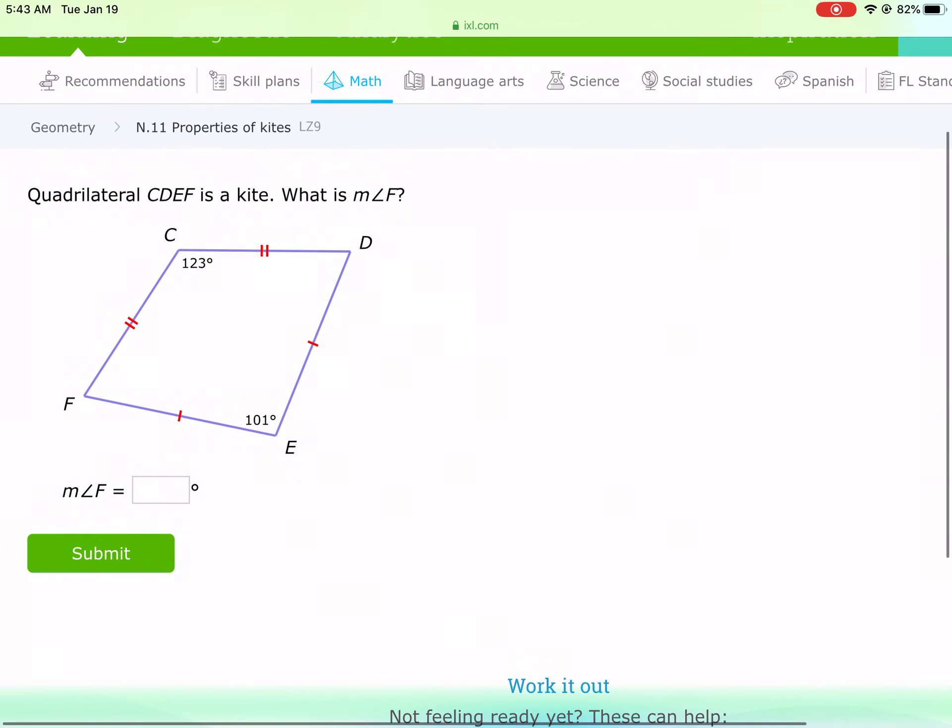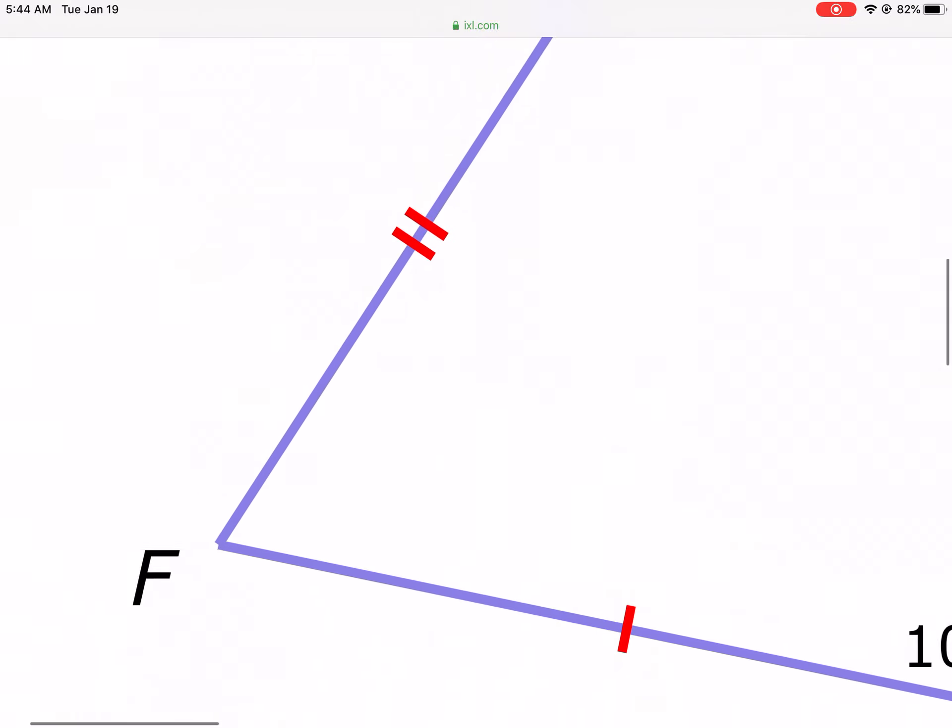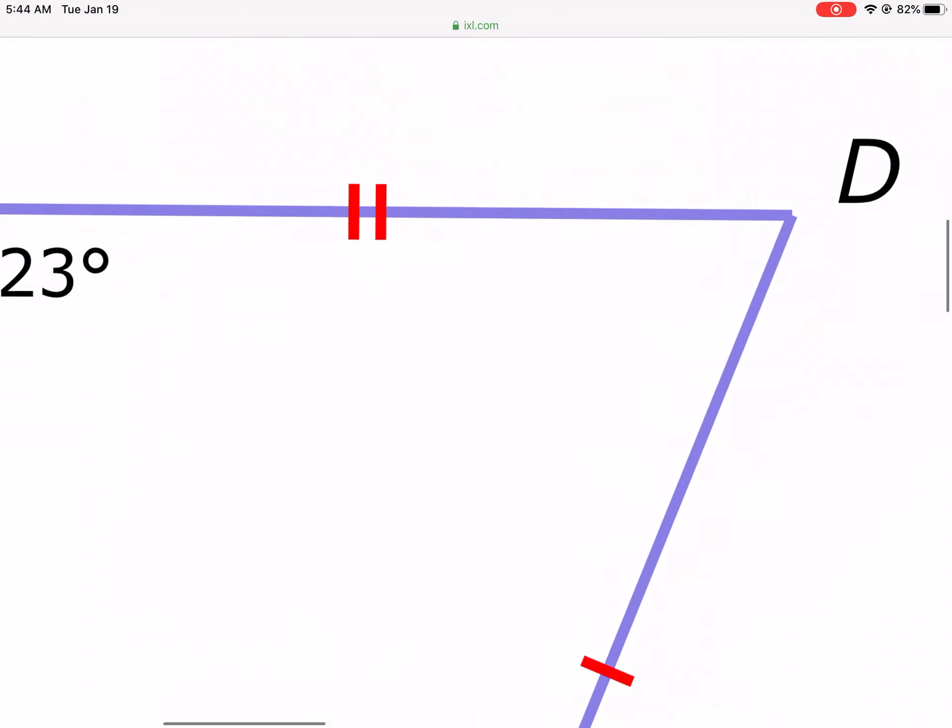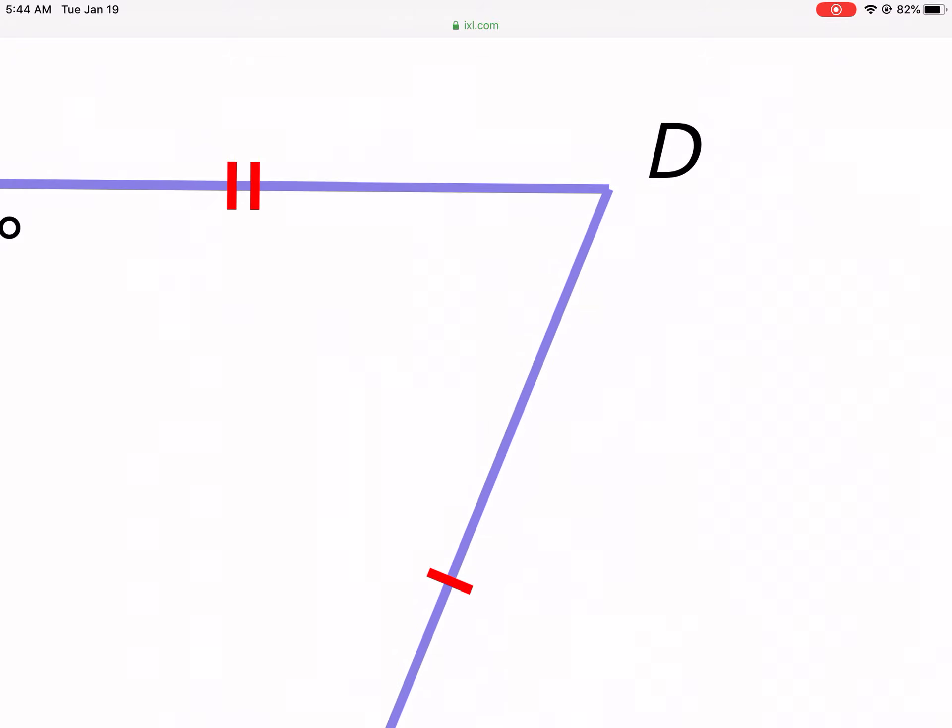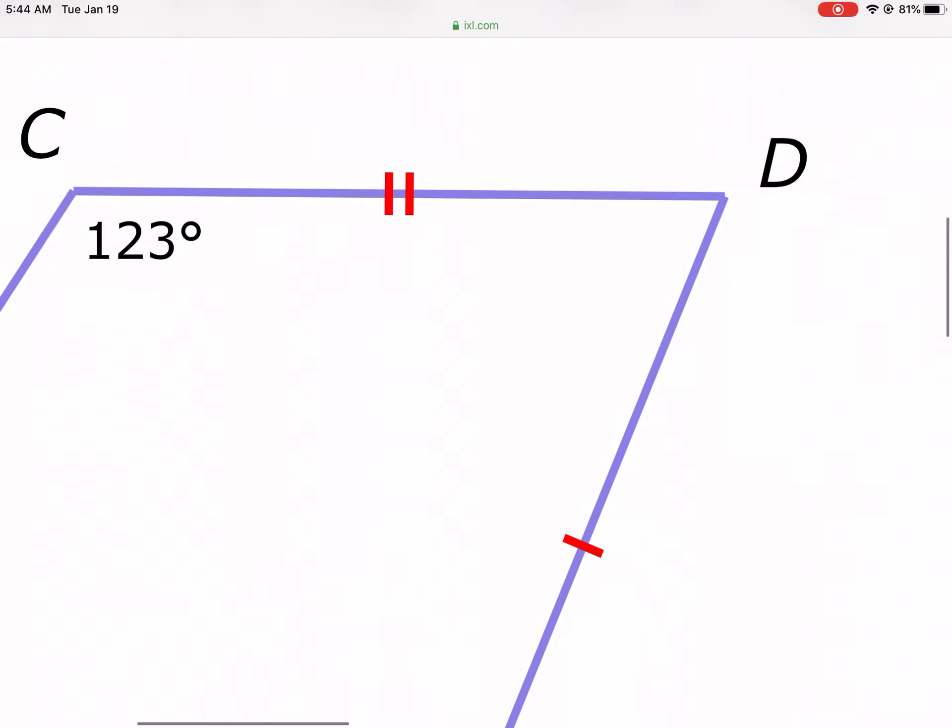Okay, same deal here. IXL is very repetitive. We have 360 degrees in a complete quadrilateral, but we're going to subtract 123 and 101. Once I do that, I get 136. 136 gets split evenly between D and F. You'll notice the angles that are congruent are always with two different sides next to each other, so these are not congruent sides, CD and DE are not congruent.